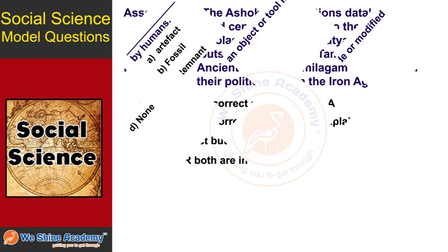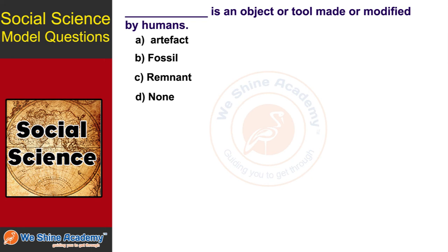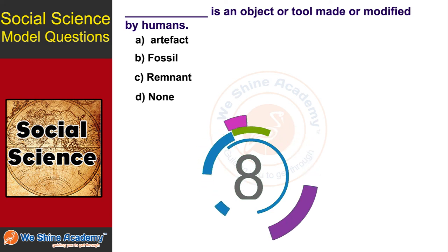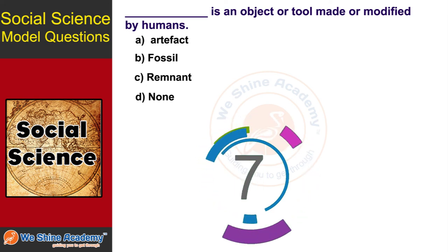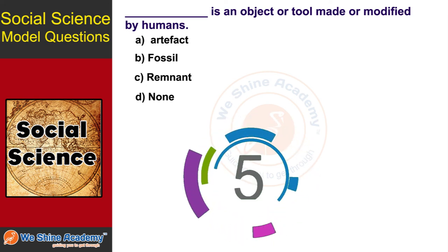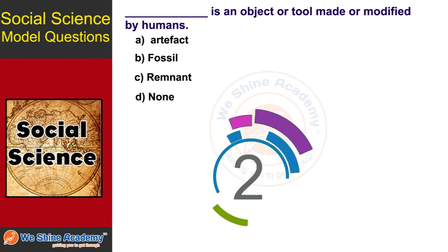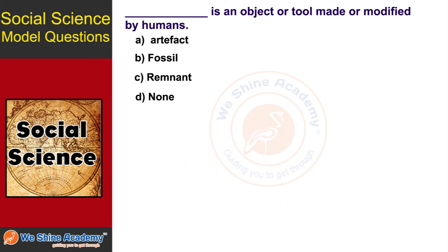The next question is: an object made or modified by humans is called what? You have 10 seconds to find out. The answer is Option A, artifact.